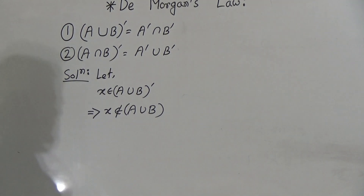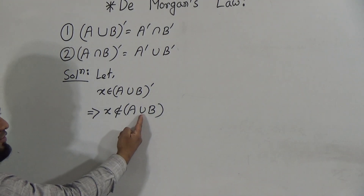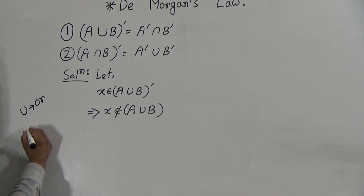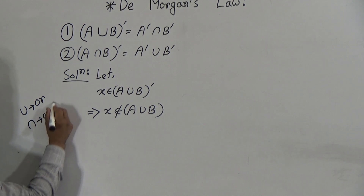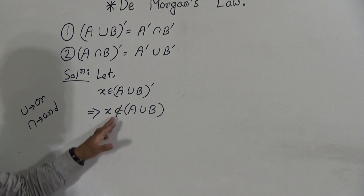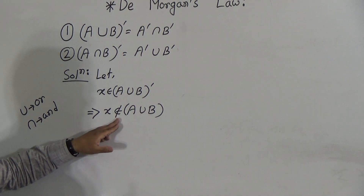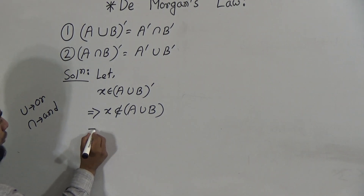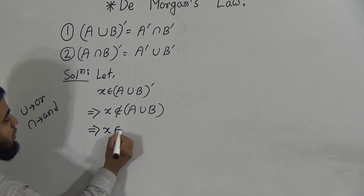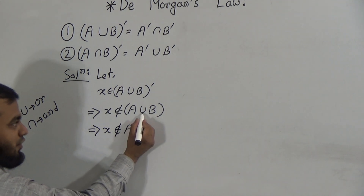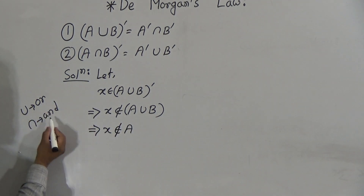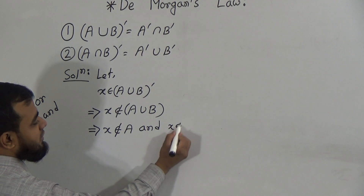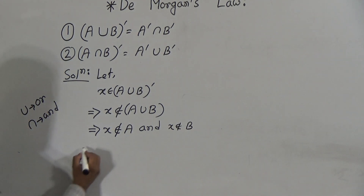In general, in place of the union sign we use 'or', and in place of intersection we use 'and'. Since there is a negative sign — x doesn't belong — we will use the alternative word. That means x doesn't belong to A, and in place of union we use 'and' because of this negative sign, and x doesn't belong to the set B.